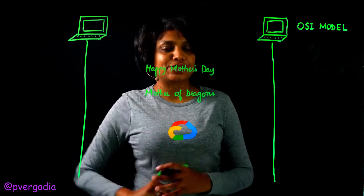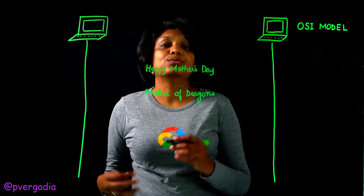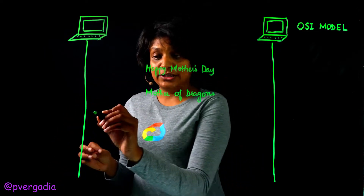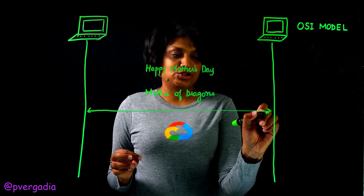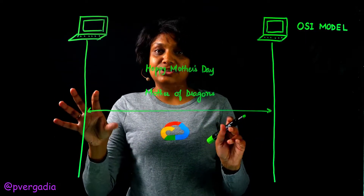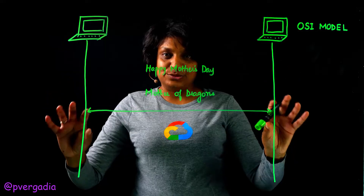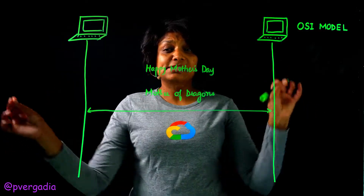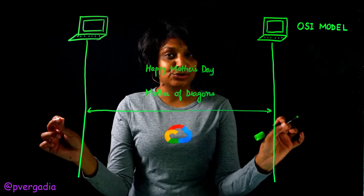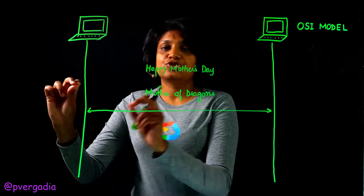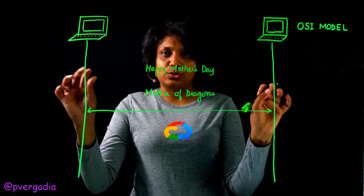The shipping service creates a label with sender and receiver information — I'm the sender and my mom is the receiver. This establishes a connection so that the package can traverse from me to her.